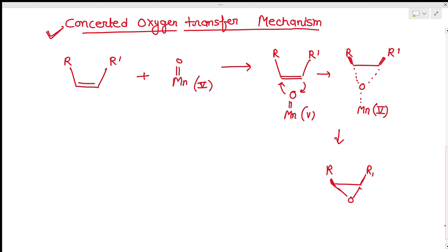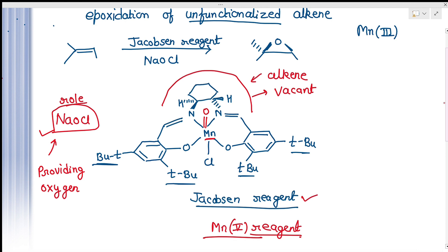What is asked in exam question papers is just about the stereochemistry — which stereochemistry you are getting. You are given the Jacobsen reagent and the alkene, and you have to find out the stereochemistry. Now see how we can find out the stereochemistry. The lower side of the Jacobsen reagent is bulky, so the reagent attacks from above the plane. If our Jacobsen reagent is SS type, then generally the above-the-plane epoxide is formed.